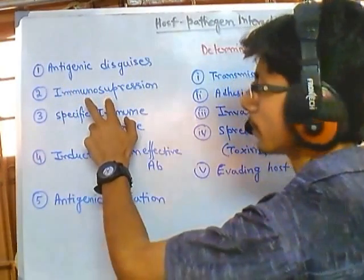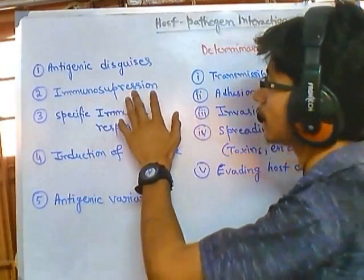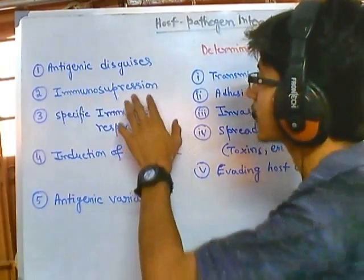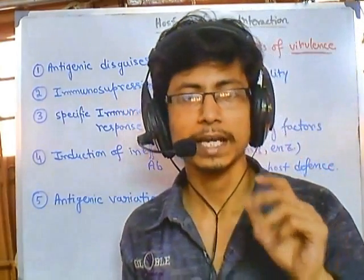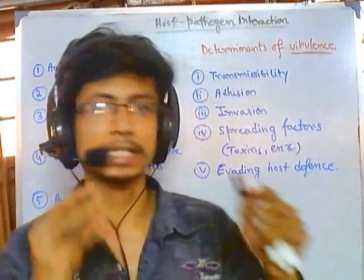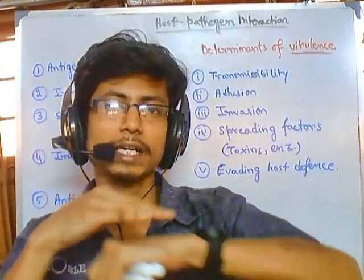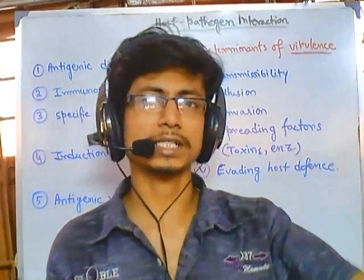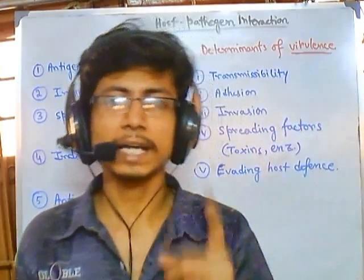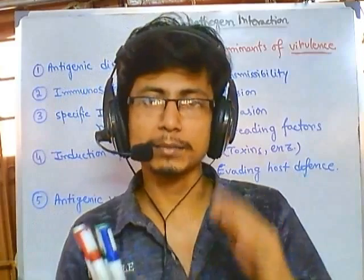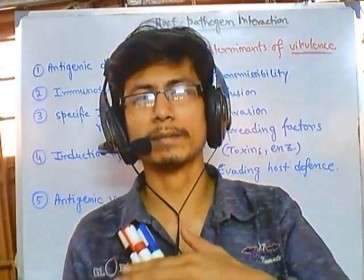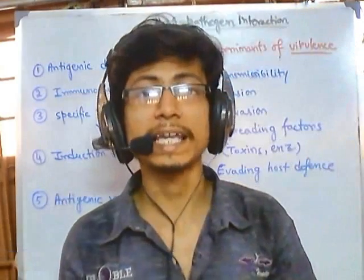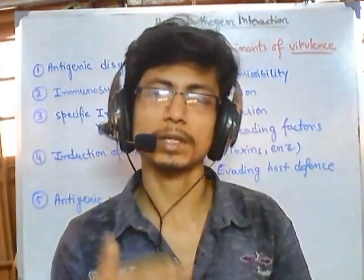The second thing is immunosuppression. Normally, if a pathogen is present in the bloodstream for a longer period of time, our immune system cells can recognize it, catch it, and kill it. But if that pathogen is hiding somewhere else for a very long period of time, it just stays there, grows, and starts infecting again — working against the host's immunity.